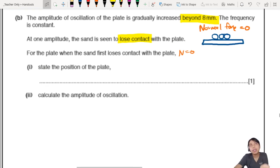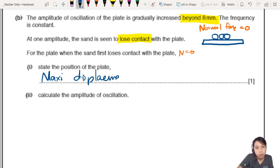So for the plate, when the sand first loses contact with the plate, means normal force is zero. State the position of the plate. When does that happen? If you're not sure, grab your phone or something, put it on your hand, and you make your hand oscillate up and down. You will notice that at some point, if you oscillate big enough, the calculator will actually lose contact with your hand. It's like floating. And this is what is happening here.